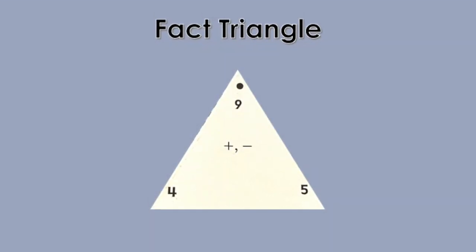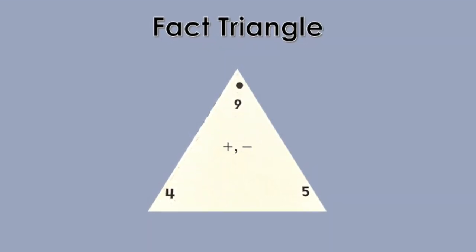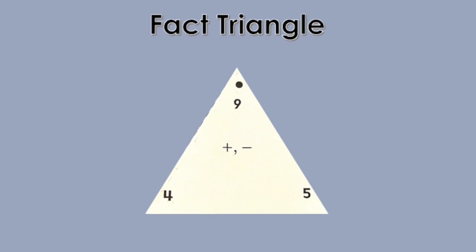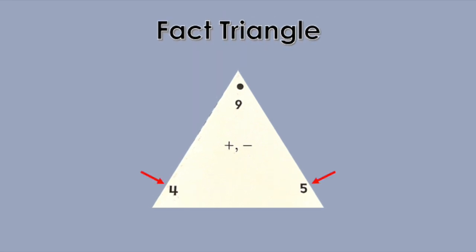This is what a fact triangle looks like. Fact triangles show the three numbers in a fact family. The two numbers in the bottom corners are called the addends. When these two numbers are added together, the sum is the top number.